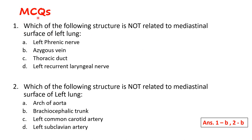Question 3: Which of the following is not related to mediastinal surface of the left lung? Options: left phrenic nerve, azygous vein, thoracic duct, left recurrent laryngeal nerve. As soon as you see the word 'vein' - azygous vein is not related to the left lung. Correct answer: B. Question 4: Which of the following is not related to mediastinal surface of the left lung? Options: arch of aorta, brachiocephalic trunk, left common carotid artery, left subclavian artery. The brachiocephalic trunk is not related to the mediastinal surface of the left lung. Correct answer: B.